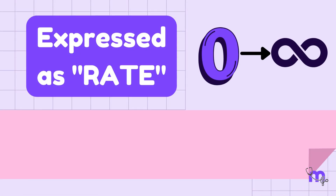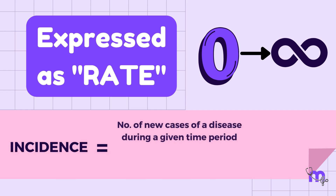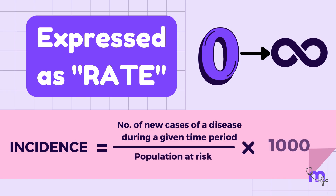It can be represented by the formula: Incidence = (Number of new cases of a disease during a given time period / Population at risk) × 1000.